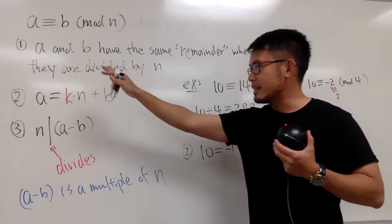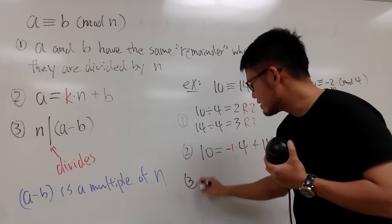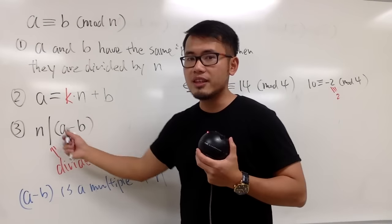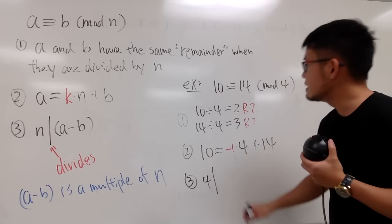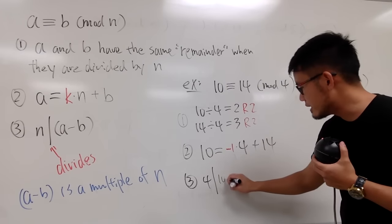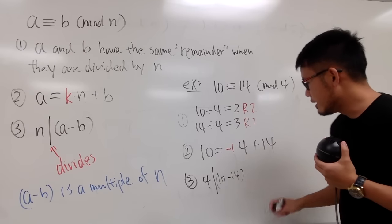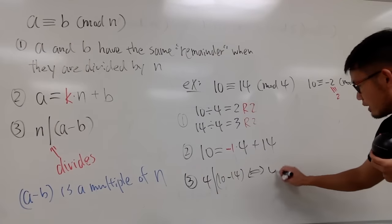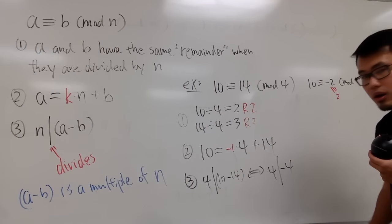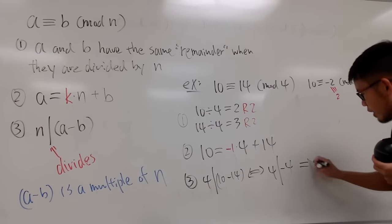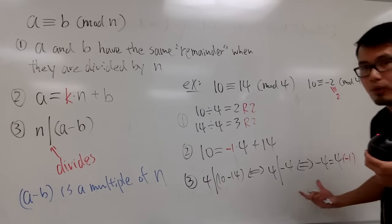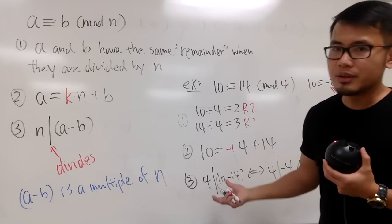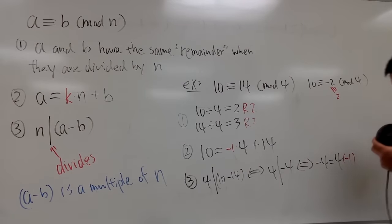And the third way, as I said, n divides into a minus b. So n is 4, divides into a minus b, which is 10 minus 14. In other words, we are saying that 4 divides into negative 4. Why? Because we know negative 4 is equal to 4 times negative 1. This is a multiple. And once again, we are allowing negative numbers like this, right?